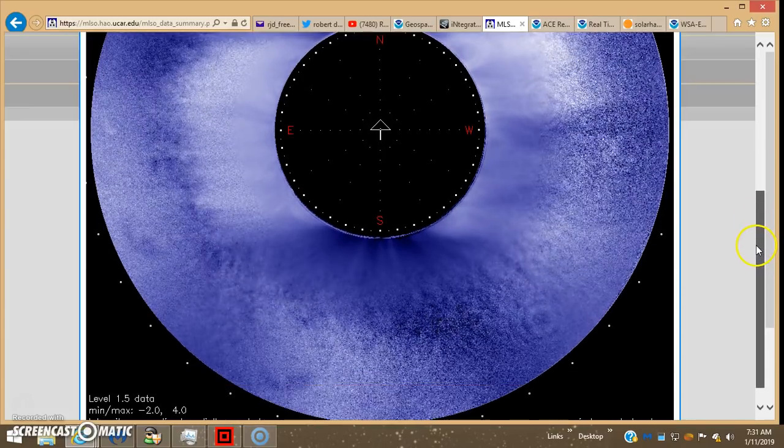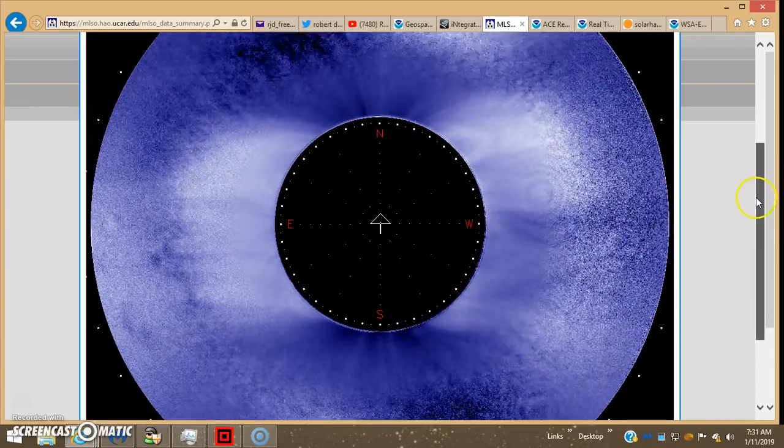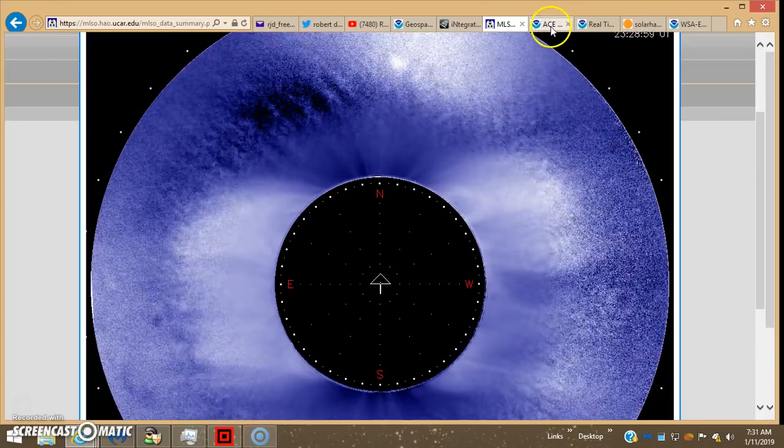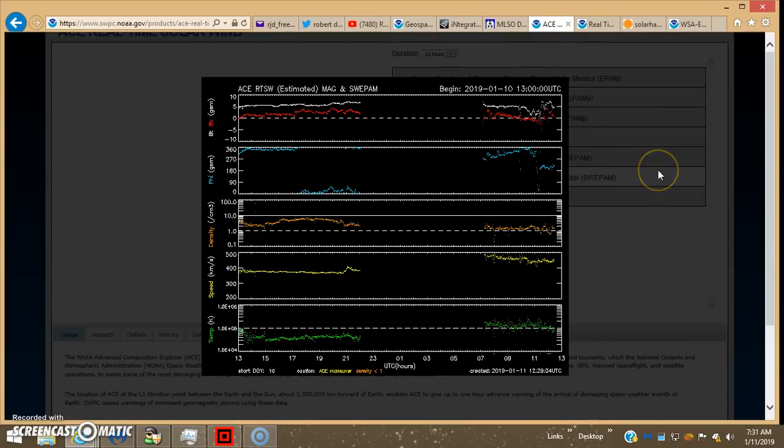And then we get these data gaps showing up. The one yesterday on ACE was broken in like an hour, two hours, three hours, four hours - it was all broken up. But now we got straight up back to a nine hour gap, really more than nine hours. Say nine and a half hour gap, data gap on ACE.